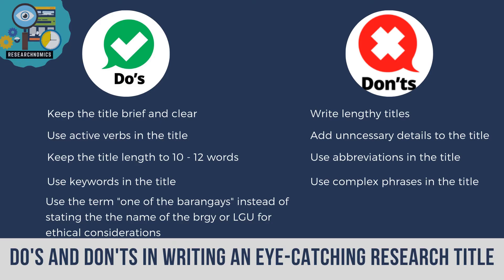The do's and don'ts in writing an eye-catching research title. For the do's: keep the title brief and clear, use active verbs in the title, keep the title length to 10 to 12 words, use keywords in the title, and use the term 'one of the barangays' instead of stating the name of the barangay or LGU for ethical considerations. For the don'ts: do not write lengthy titles, do not add unnecessary details, do not use abbreviations, and do not use complex phrases in the title.